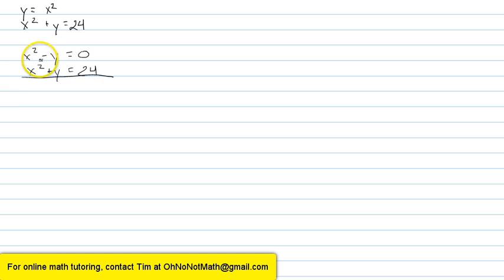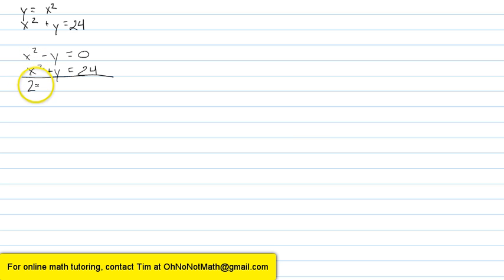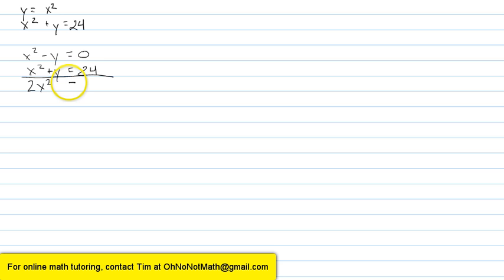And I'll add the two equations. So x squared plus x squared is 2x squared. Negative y plus y is 0. 0 plus 24 is 24.